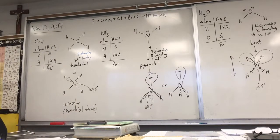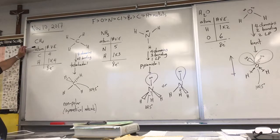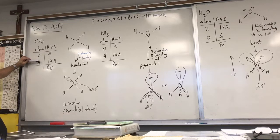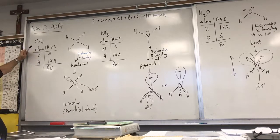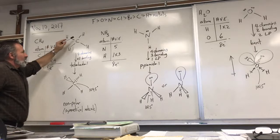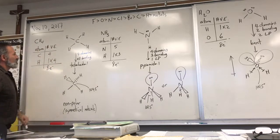Starting with methane: accounting for the number of valence electrons, we get eight, because carbon has four and each hydrogen atom has one. The total of eight electrons have to be accounted for in the Lewis structure of methane, and that's taken care of by these four bonds — that's eight electrons.